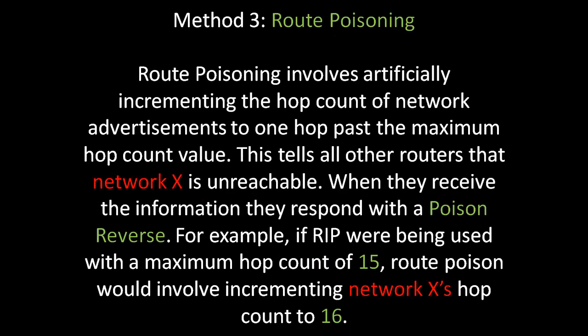Method 3 is route poisoning. Route poisoning involves artificially incrementing the hop count of network advertisements to one hop past the maximum hop count value. This tells all other routers that network X is unreachable. When they receive the information, they respond with the poison reverse. For example, if RIP were being used with a maximum hop count of 15, route poisoning would involve incrementing network X's hop count to 16.